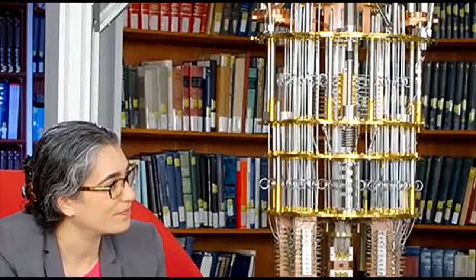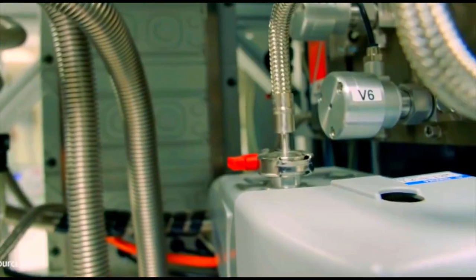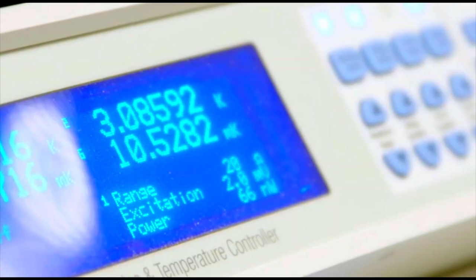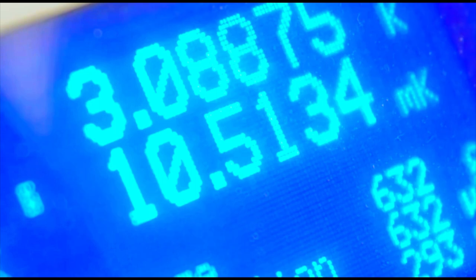In the short time I have today, our task is to tell the story. Room temperature is 300 Kelvin. As you get down all the way to the bottom of the fridge, it's at 10 millikelvin.